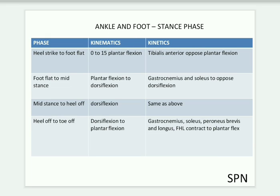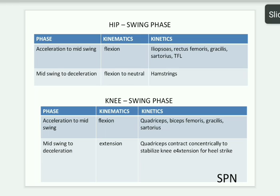For ankle and foot in stance phase: heel strike to foot flat is 0 to 15 degrees of plantar flexion; tibialis anterior opposes the plantar flexion. Foot flat to mid stance: plantar flexion to dorsiflexion; gastrocnemius and soleus oppose the dorsiflexors. Mid stance to heel off: dorsiflexion movement, same muscles — gastrocnemius and soleus opposing dorsiflexion. Heel off to toe off: dorsiflexion to plantar flexion; muscles involved are gastrocnemius, soleus, peroneus brevis, peroneus longus, and flexor hallucis longus, contracting for plantar flexion.